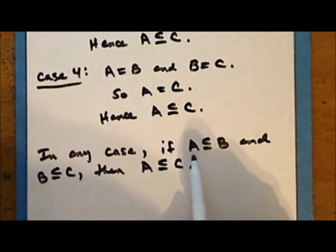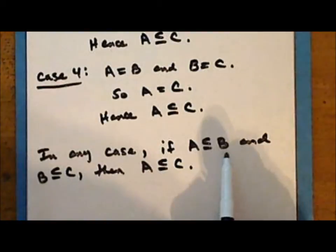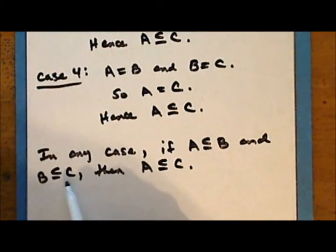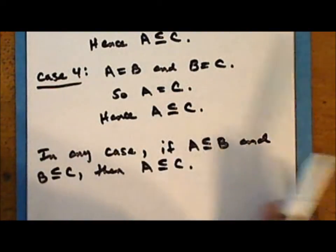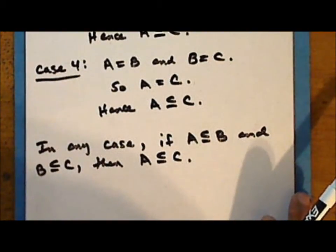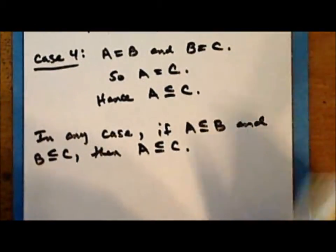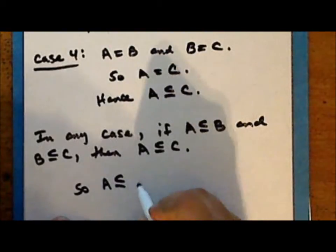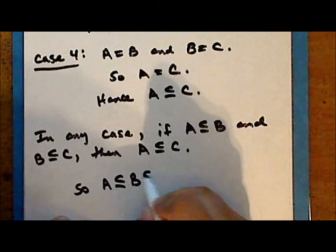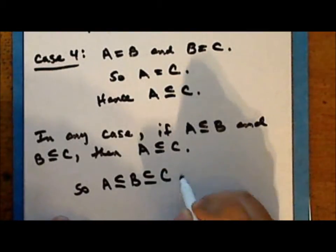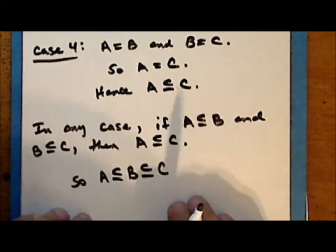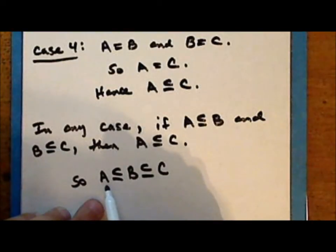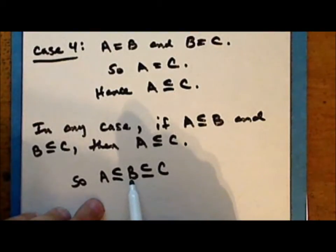Since A is a subset of or is equal to B, and B is a subset of or is equal to C, this implies that A is a subset of or is equal to C. We usually write this in one statement called a chain: A ⊆ B ⊆ C. In a given chain, a given set is a subset of or possibly equal to any set that follows it.